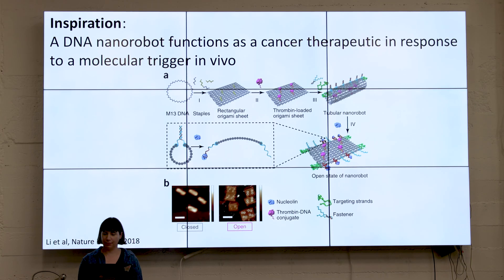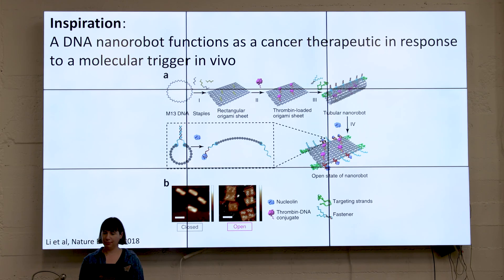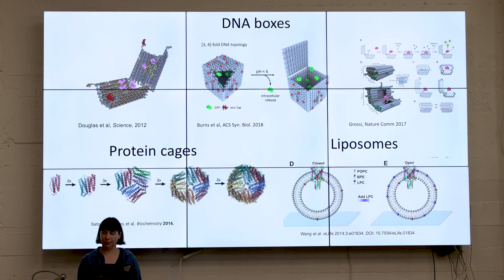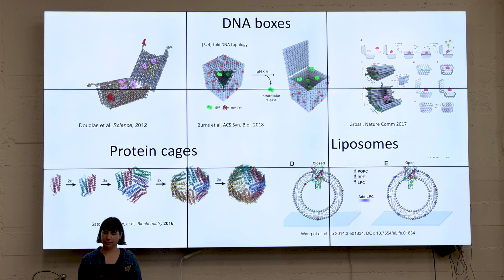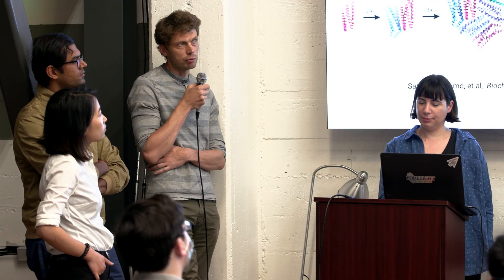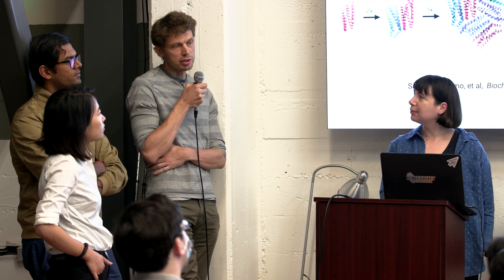One related work we found, among many others, is this cancer-fighting robot that opens and responds to ligands over-expressed in cancer cells. But this particular construct is irreversible. We want something reversible. We considered many different alternatives — like DNA boxes, liposomes, protein cages. We realized that for tunability of the pharmacokinetic parameters and activation, we probably need to go with a DNA box, because we can program precisely how many thrombins we're going to put in, what lock we're going to use, and tune the strength of all of those.